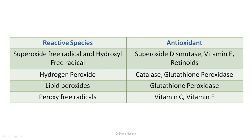To summarize the antioxidant responses: superoxide free radicals and hydroxyl free radicals are balanced with the help of superoxide dismutase, vitamin E, and various retinoids. Hydrogen peroxide is broken down to water by catalase and glutathione peroxidase. Lipid peroxides are handled by glutathione peroxidase. Peroxyl free radicals are terminated by vitamin C and vitamin E.